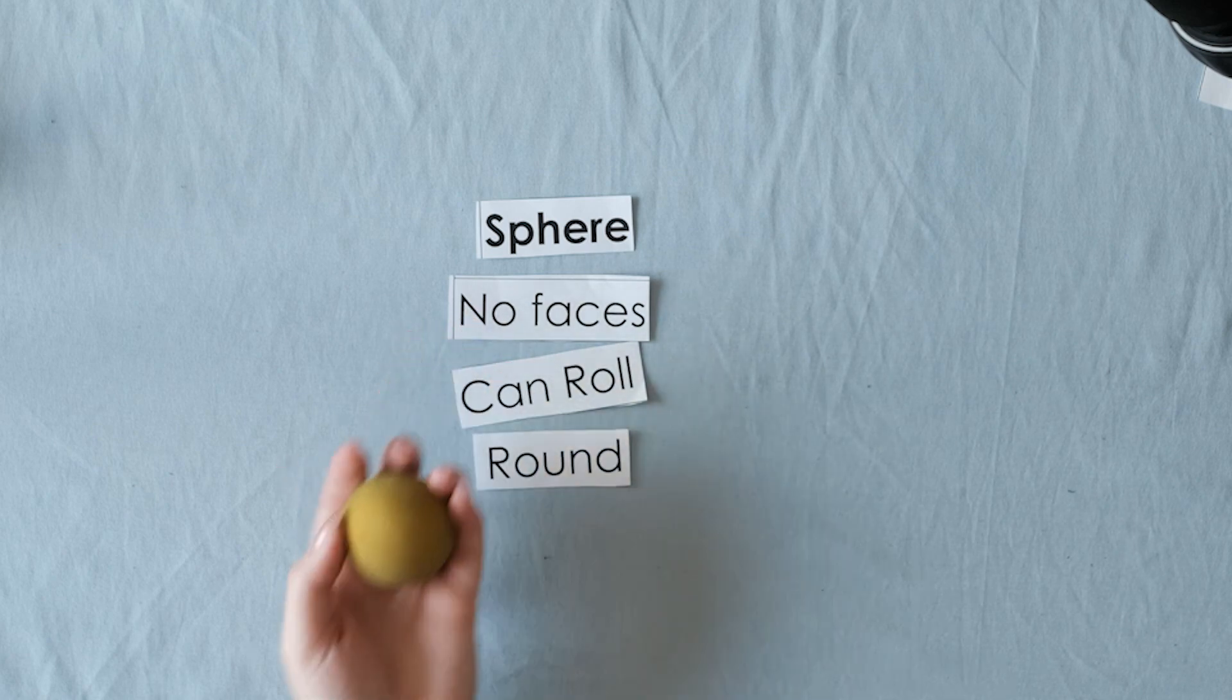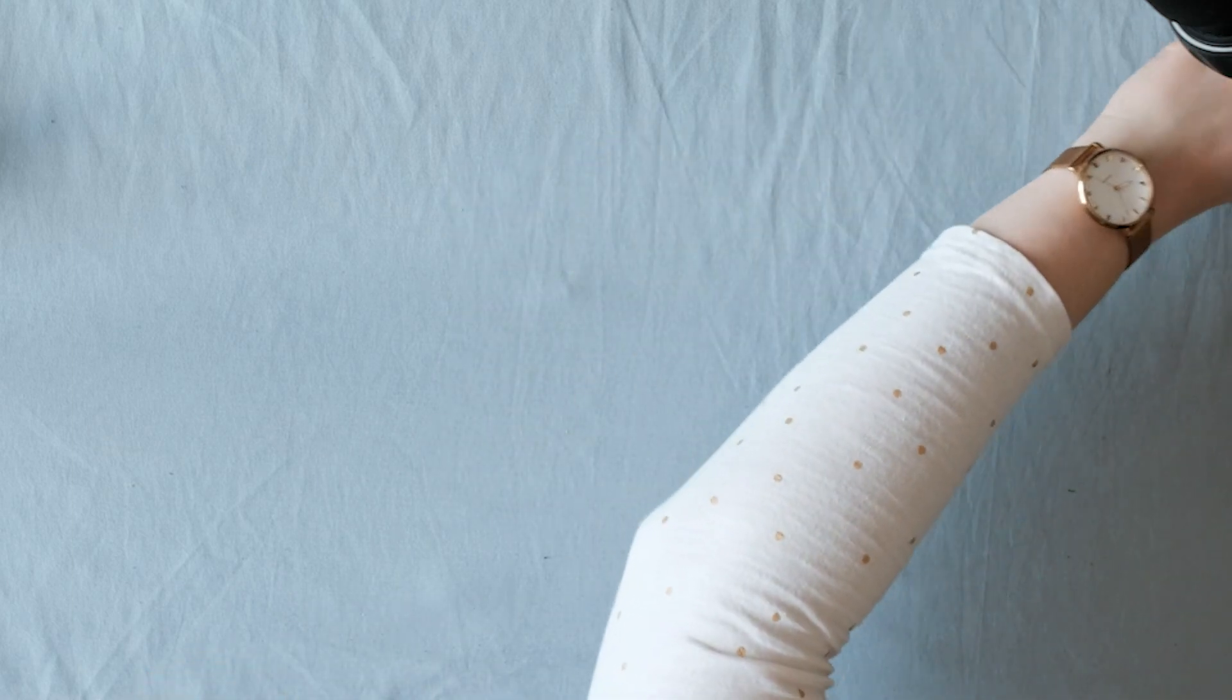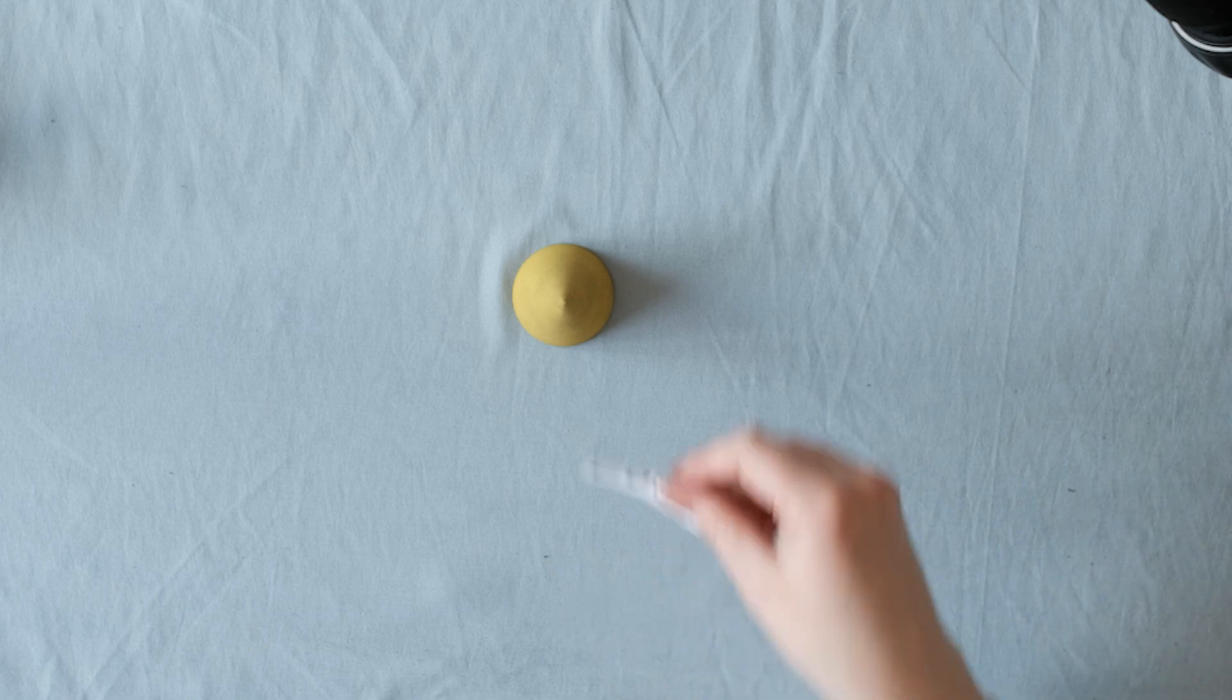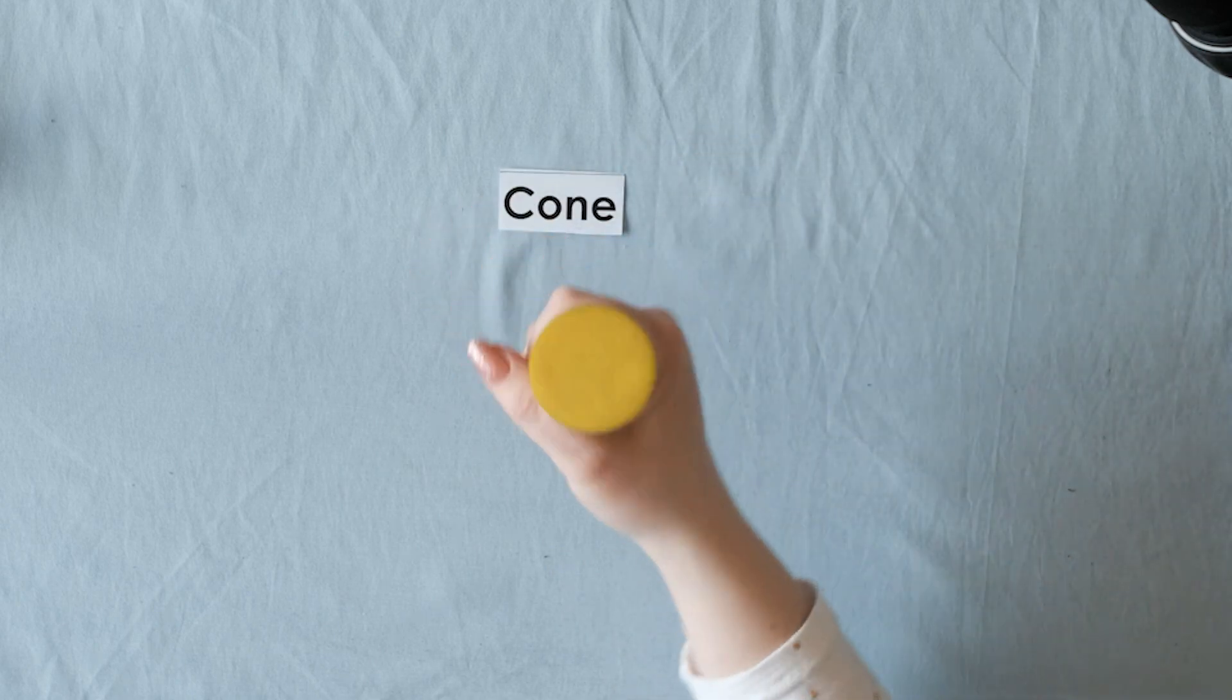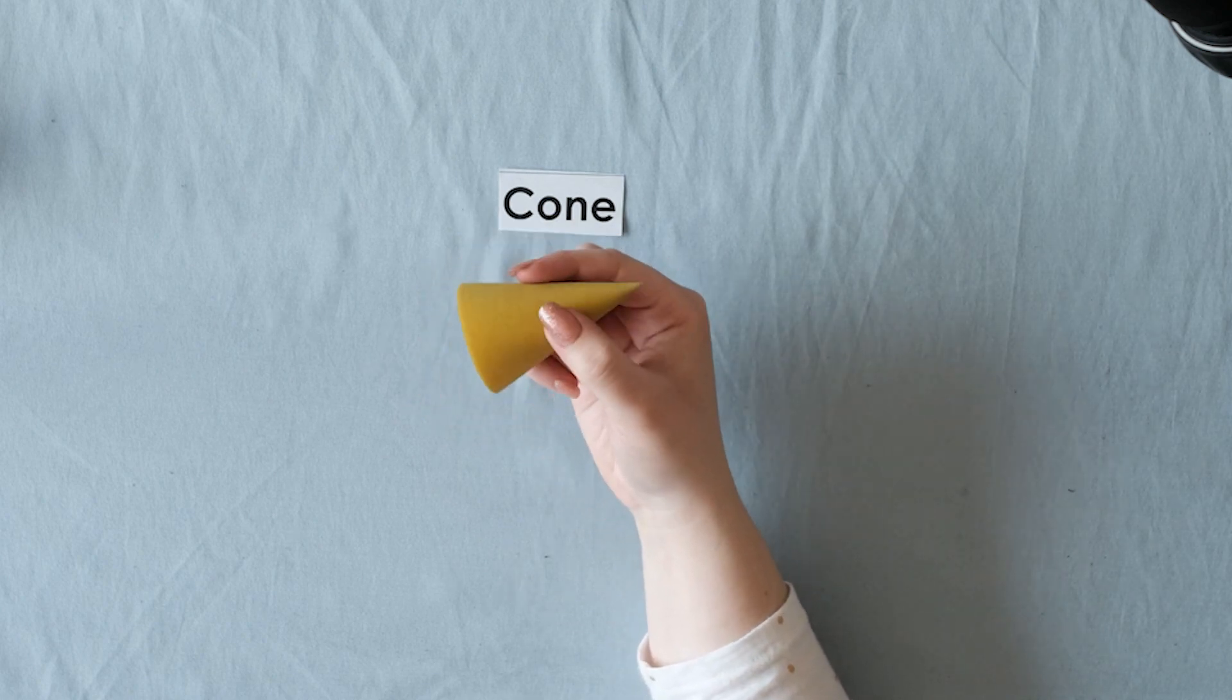The next one looks like this. You've probably seen this shape before. It's called a cone, and it probably reminds you of an ice cream cone, just like this.